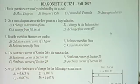For example, question number one: earth quantities are usually calculated by the use of, and he give you four choices. Mass diagram, Simpson's rule, prismoidal formula, average end area. The word usually is a word I should be attention to. This is a keyword, usually.